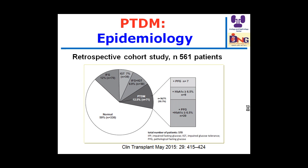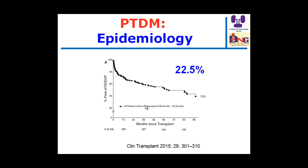Regarding epidemiology, in this cohort, normal glycemia was found in only 59%. All other patients had abnormal glycemia: impaired fasting 12%, impaired glucose tolerance 7%, impaired fasting and glucose tolerance combined 9%, and post-transplant diabetes 12.5%. Among patients without pre-transplant diabetes, the rate of diabetes was 22.5%.